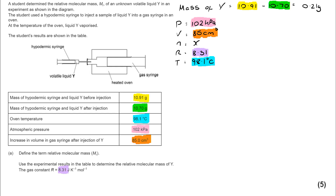I've colour coded so you can see where these numbers come from, and I've written them down. My next step, after systematically writing down these values, is to go through and work out which units are incorrect and which I therefore need to change. There are actually three of them on this one: I need to convert my pressure to Pascals, my volume to meters cubed, and my temperature to Kelvins.